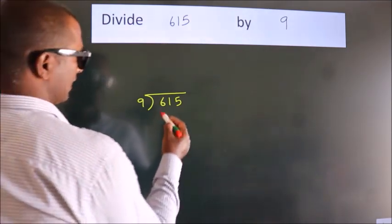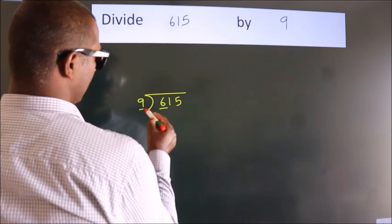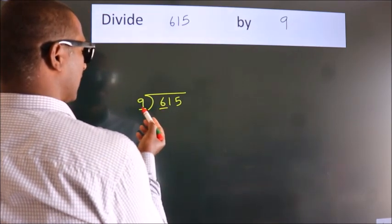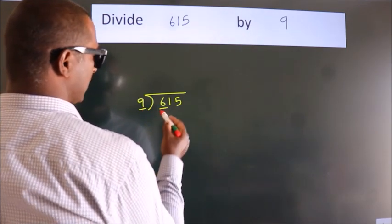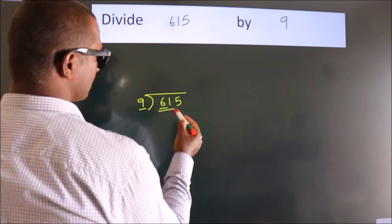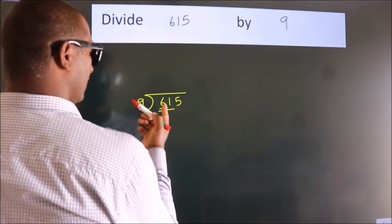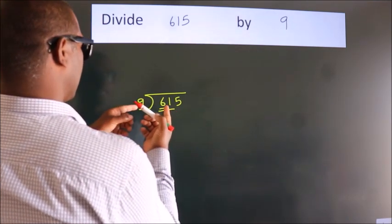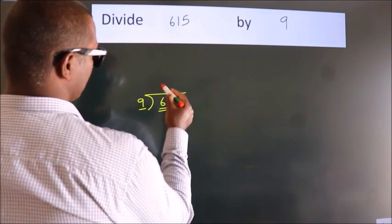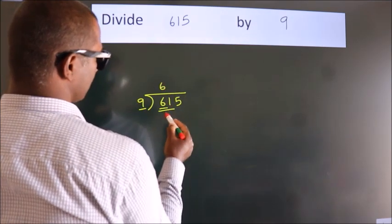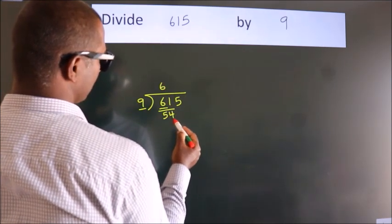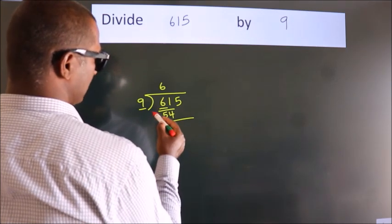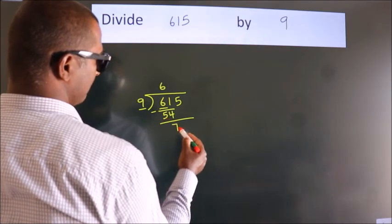Here we have 6, and here 9. Since 6 is smaller than 9, we should take two numbers: 61. A number close to 61 in the 9 times table is 9×6=54. Now we subtract and we get 7.